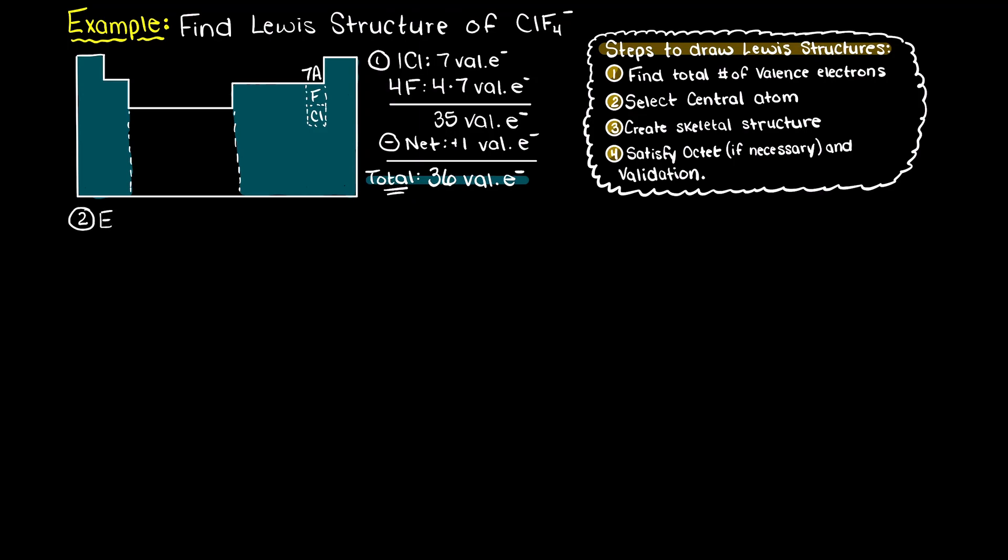Next we need to find what is going to be our central atom. I have listed the electronegativities of both chlorine and fluorine here. Remember what we said before, we typically use our least electronegative atom as our central atom. Therefore, it is clear that chlorine is going to be the central atom in this compound.